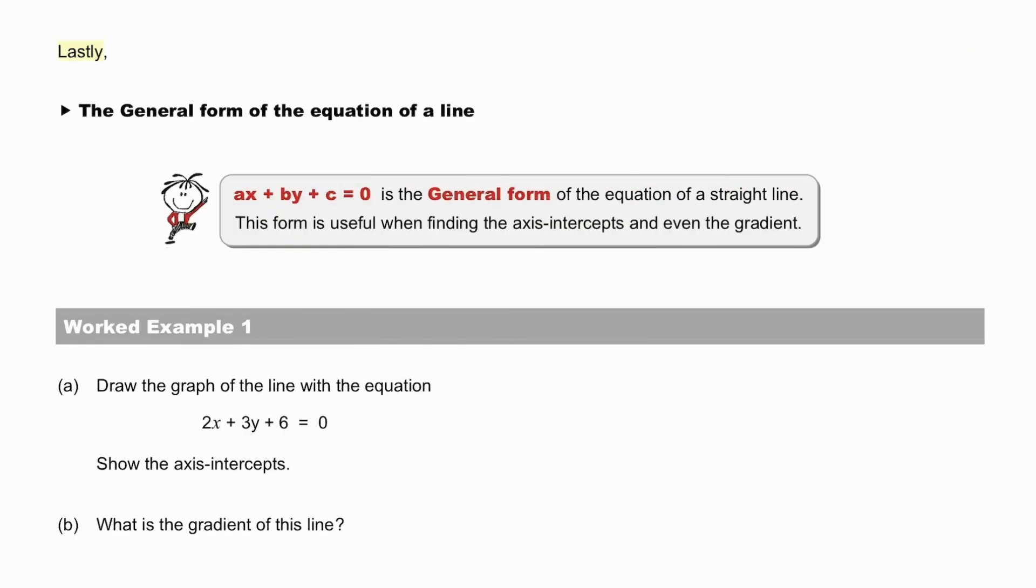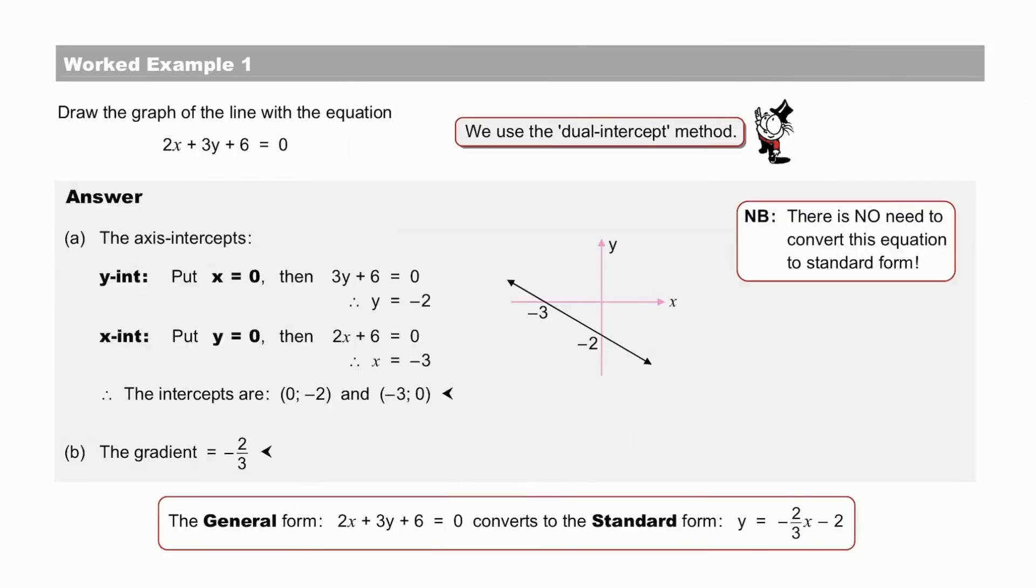Lastly, the general form of the equation of a line, ax plus by plus c equals 0. Pause to do worked example 1, where we have such an equation. Pause to check your solution to worked example 1. This equation, as we said, is in general form. There is no need to convert this equation to the standard form. Did you perhaps do so? We use the dual intercept method.